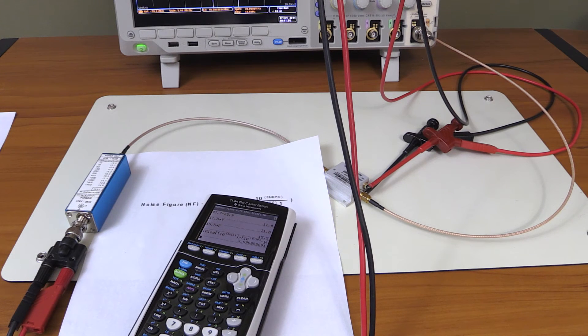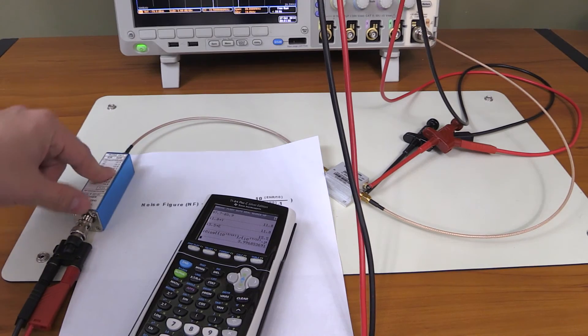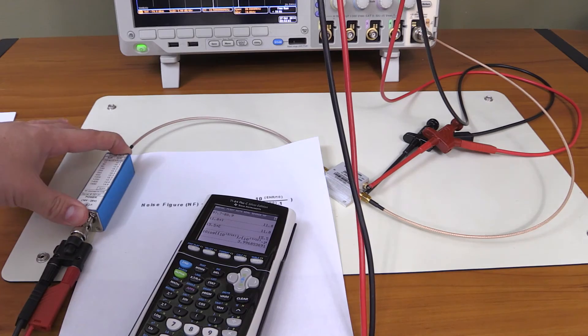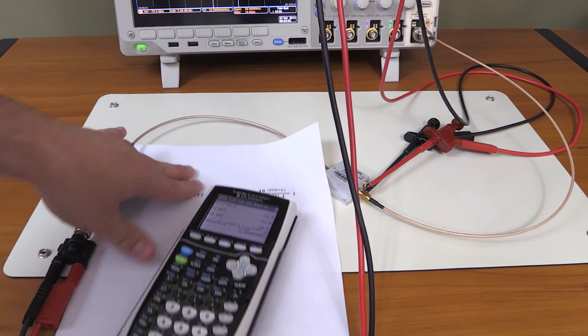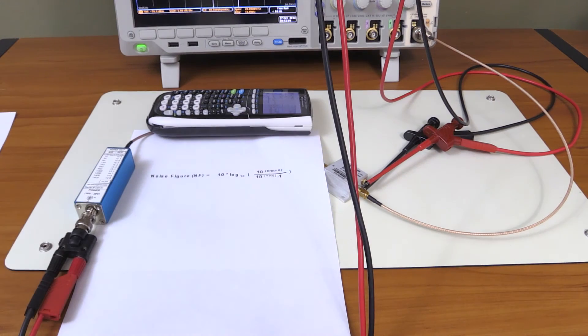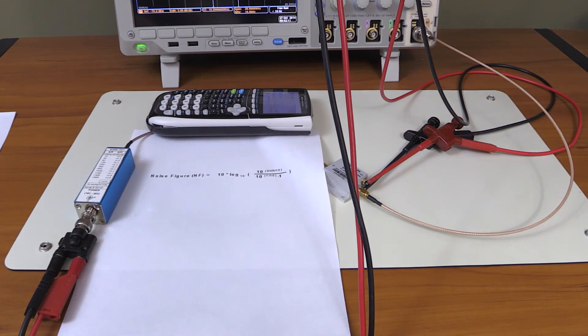That's all there is to it. This is how you determine the noise figure using the Y-factor method. Again, you need a noise source, you need to know the ENR, you determine the difference of the output power with the noise source turned on and noise source turned off, and then you plug the entire thing into the equation, let your calculator do the math, and that's it. That's all the magic there is to it.